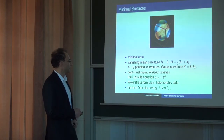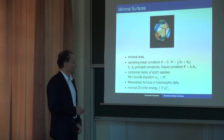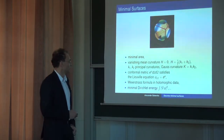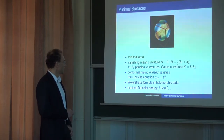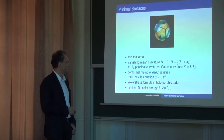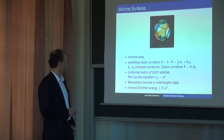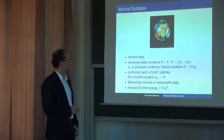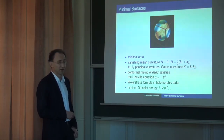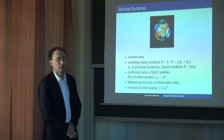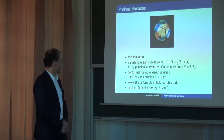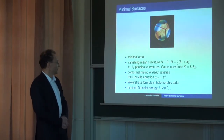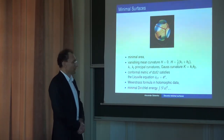On the surface you have two principal directions, and the half sum of these curvatures is called the mean curvature. The Gaussian curvature is the product of these two principal curvatures. So if the mean curvature vanishes, this is the minimal surface. Analytically, if you look at the conformal metric on this surface, it satisfies the Liouville equation — that's the conformal factor and z is a conformal coordinate on the surface. There also exists an explicit representation for minimal surfaces in terms of holomorphic data, and therefore all this theory has a lot to do with complex analysis.